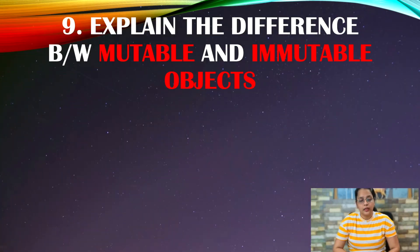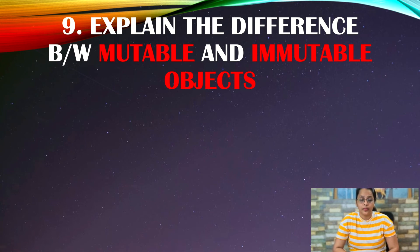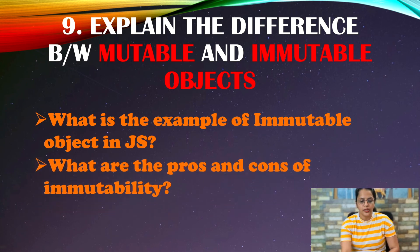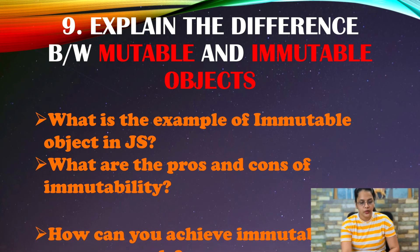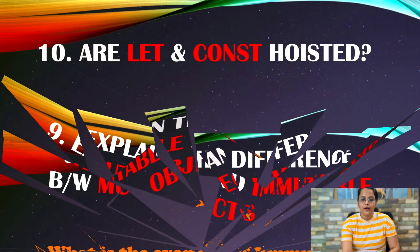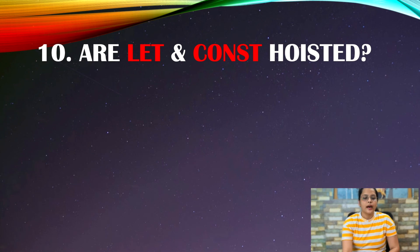The next question is: explain the difference between mutable and immutable objects. This is especially important if you are giving interviews for React or other complex frameworks. Related questions include: what is an example of an immutable object in JavaScript, what are the pros and cons of immutability, and how can you achieve immutability in your own code?